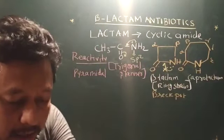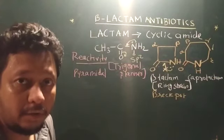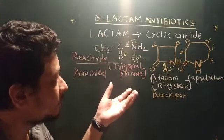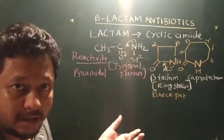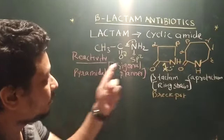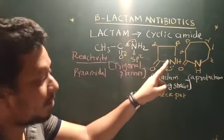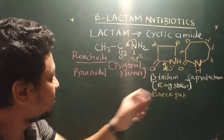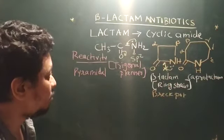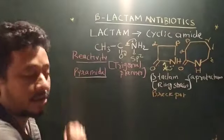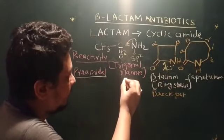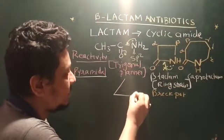So, that means, basically, the nitrogen of amide wants to be in trigonal planar condition. But, because of the ring strain, because of the ring configuration structure, they are adopting, they are forced to adopt a pyramidal structure. Now, if you see, a pyramid always have a base and an apex.